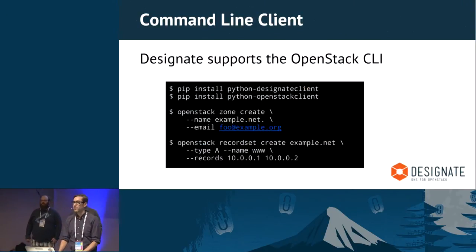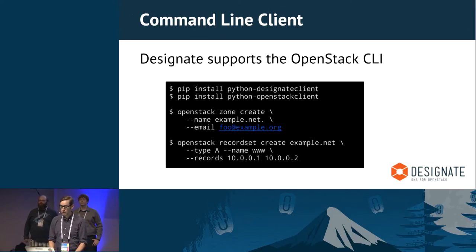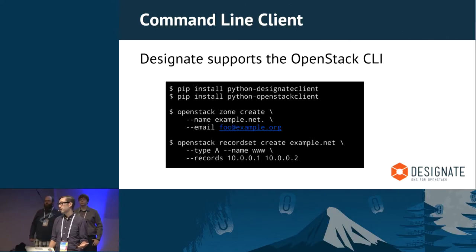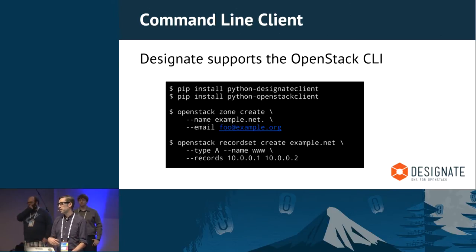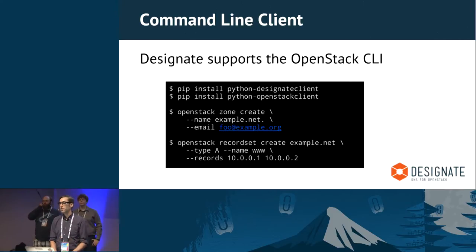Next, there's a command line client that integrates with the OpenStack command line client. You install the Python Designate client package, and when you install the Python OpenStack client package, it installs the plugin that lets you talk to Designate. You log in with your credentials, authenticate with Keystone, your service catalog provides the endpoint, and then you can run commands like 'openstack zone create' to create a new zone, or 'openstack record create' to create a new A record. There are also endpoints for PTR records and others.